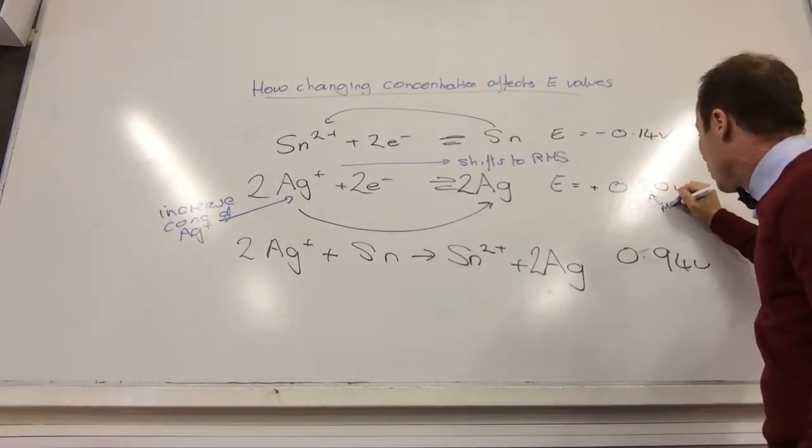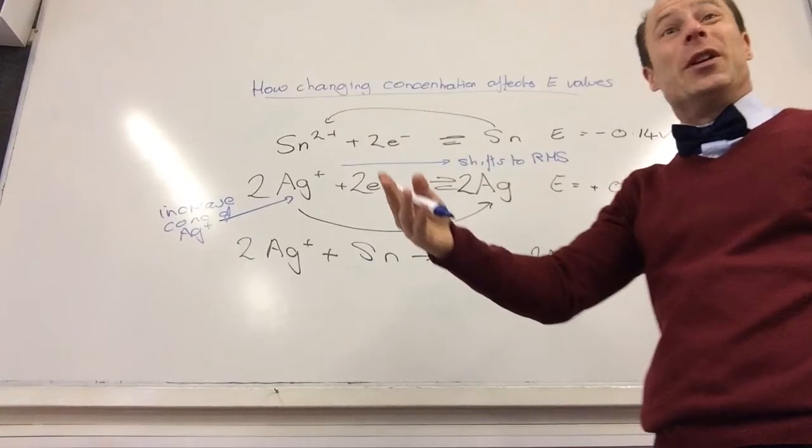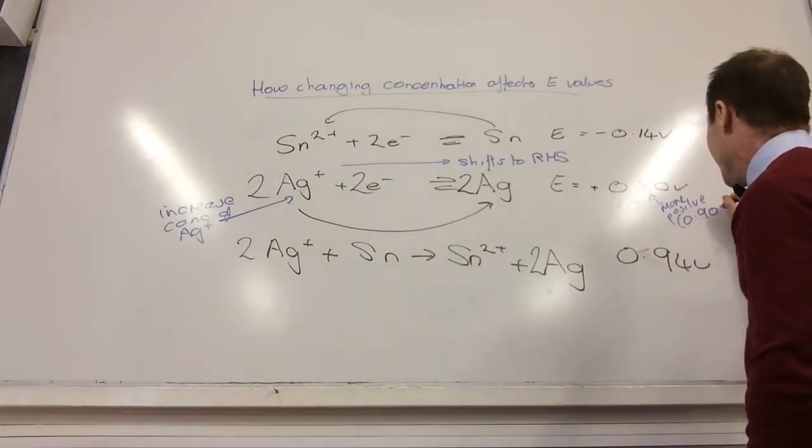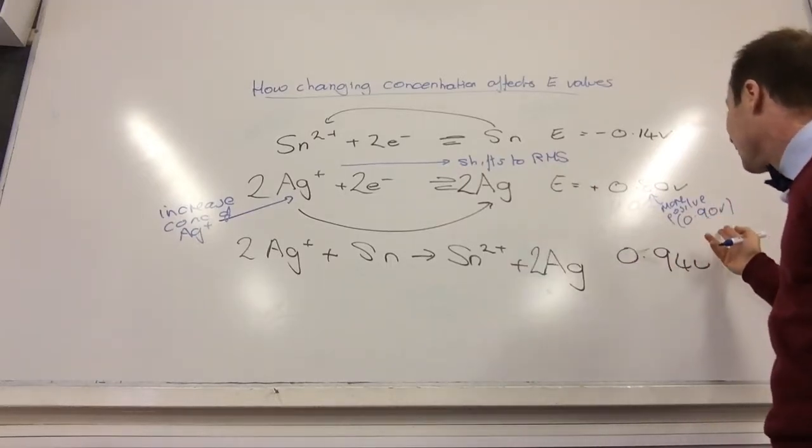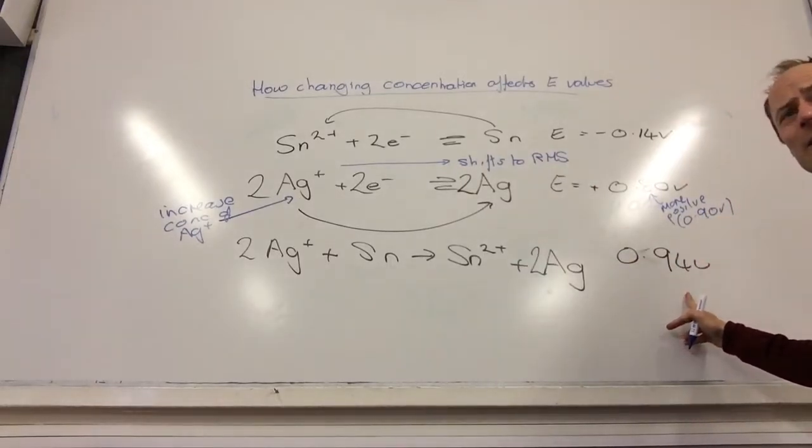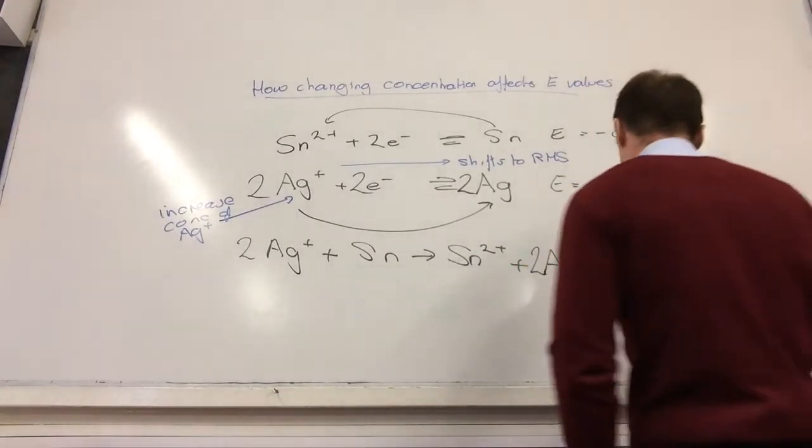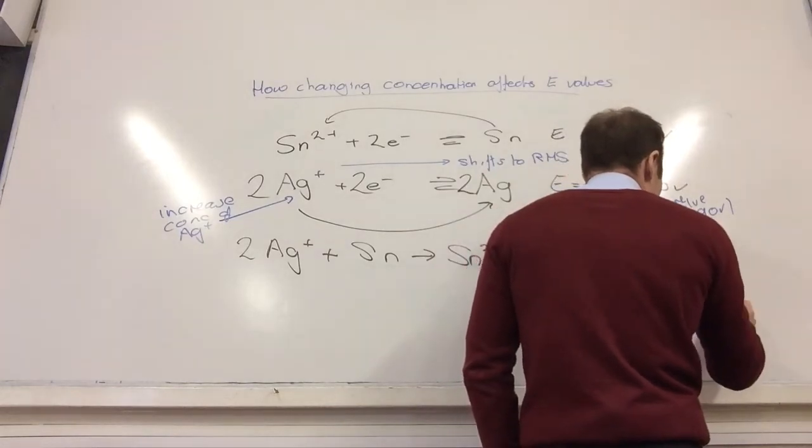So this becomes more positive. So it sometimes helps you just put numbers on it just to help you. So if you kind of just make up something, okay, so it's going to be about 0, it doesn't matter. So you can just write little notes. Let's say it goes up to 0.9 volts. So what's going to happen to this number here? Increasing, because it's going to become more positive. So it becomes more feasible.